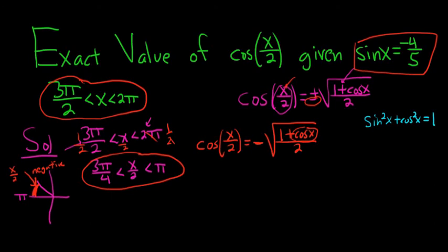Sine is negative 4 fifths. So this is negative 4 fifths squared plus cosine squared and that's equal to 1. If you square each piece, you get 16 over 25 plus cosine squared equals 1. Negative 4 squared is 16 and 5 squared is 25. Now we subtract 16 over 25 from both sides.